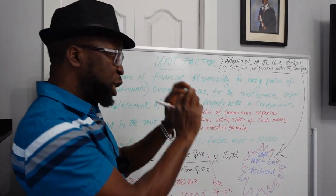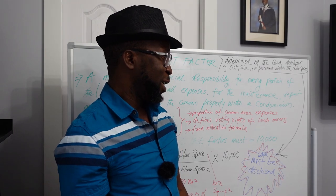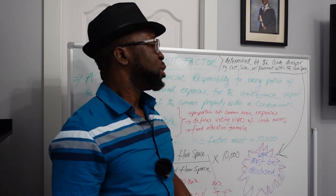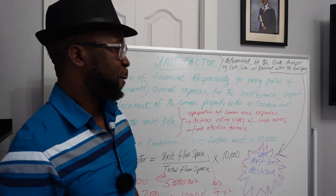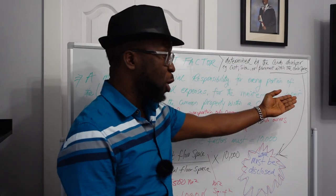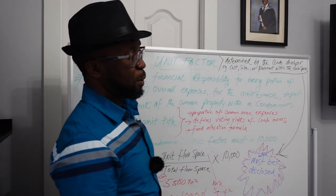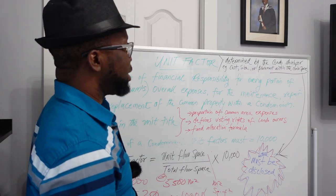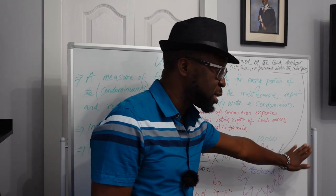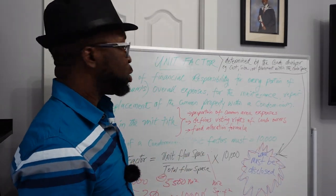So it all depends on what method the developer declares. If they are going with construction cost or size, they will always give you the unit factor. The 10,000 total is always constant — it is always 10,000, regardless of which method is used.